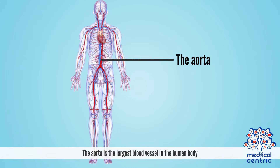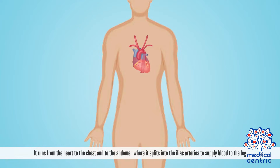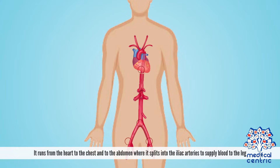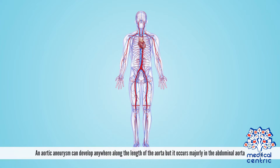The aorta is the largest blood vessel in the human body. It runs from the heart to the chest and to the abdomen, where it splits into the iliac arteries to supply blood to the legs. An aortic aneurysm can develop anywhere along the length of the aorta, but it occurs majorly in the abdominal aorta.